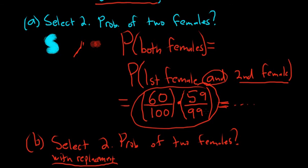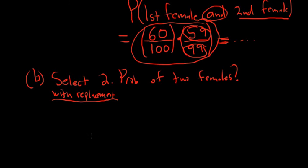With replacement. What that means is you take a person and then you put the person back, then you take another person. So this number here, this 99, will be 100. And this 59 will actually be a 60. Let me show you.